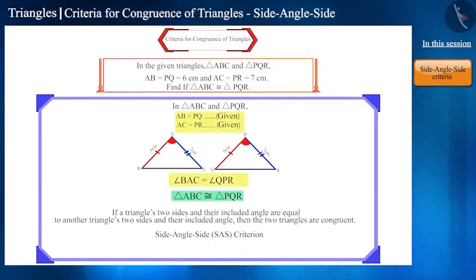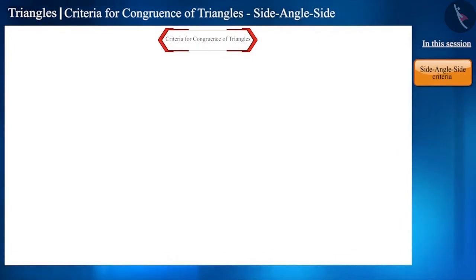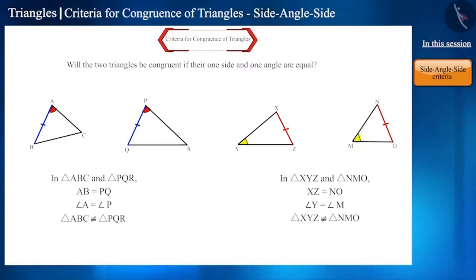Can two triangles be congruent with lesser conditions? For example, one side and one angle of two triangles are equal. Here are some examples. Here, the triangles are not congruent by just having one equal side and one equal angle.